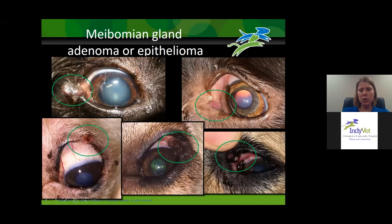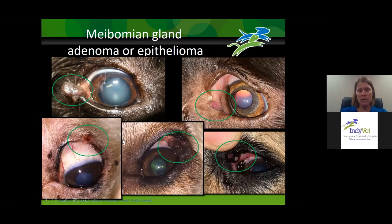I want to show you some examples of how variable the appearance of these tumors can be. This one is lobular and pigmented; this one is all pink and at the medial canthus; this one is ulcerated; this one is more pigmented; and this one has a pink area with a little area of inspissated glandular material. You can see that whitish material through the palpebral conjunctiva — just a consequence of this eyelid mass blocking those meibomian glands.